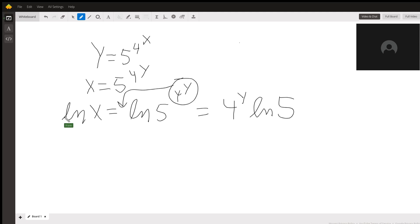Now divide both sides by log of 5. Log of x over log of 5 equals 4 to the y.